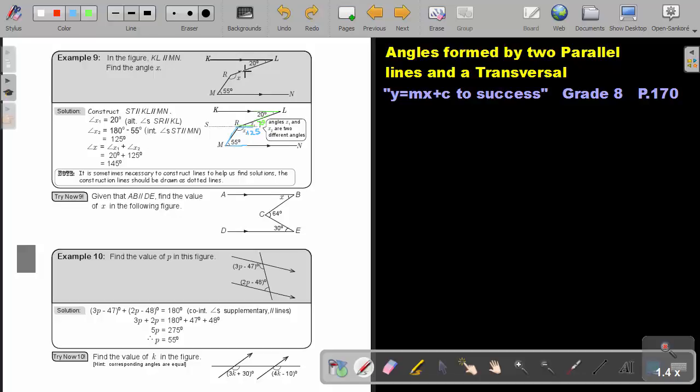Now, to find X, I must take X1 and add X2. If I add it up, I come to 145 degrees.